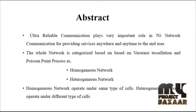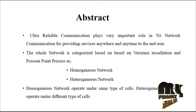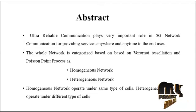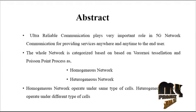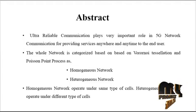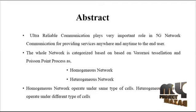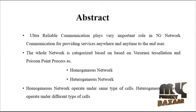The two categories are the homogeneous network and the heterogeneous network. The homogeneous network operates under the same type of cells, while the heterogeneous network operates under different types of cells. These are the two types of networks: homogeneous and heterogeneous.